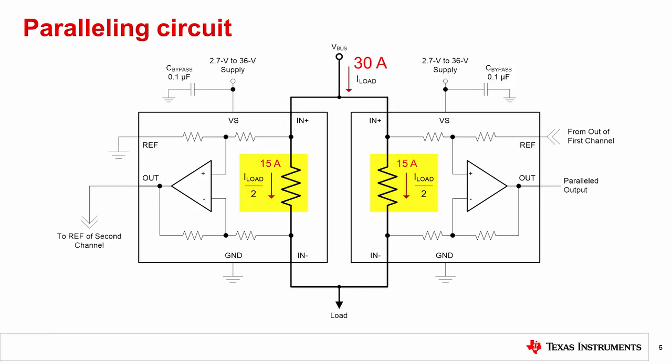Because the internal shunt resistances are the same, the load current is split between the two shunts. The output of the first channel is connected to the ref pin of the second channel, adding the outputs together. As you may have guessed, this is another variation of the summing circuit.